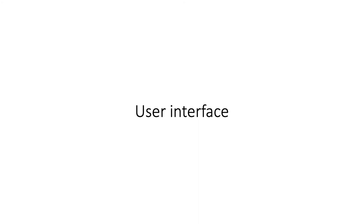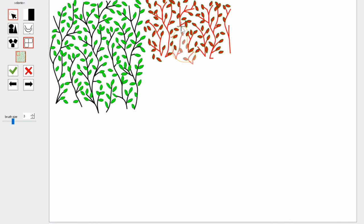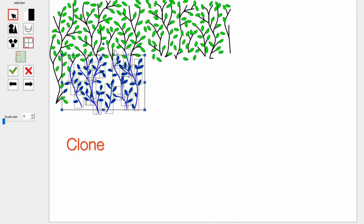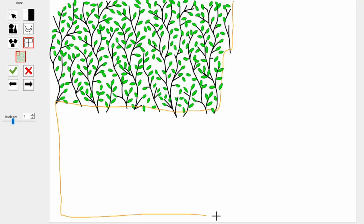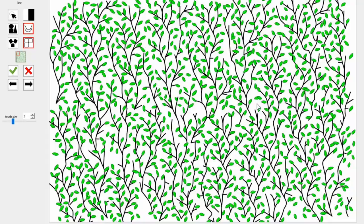The users can further improve the synthesis quality via our user interface. Our method is integrated into our interactive authoring system, which has two major functions, auto-complete and drawing, to generate repetitive patterns. For further quality improvement and customization, the users can accept, partially accept, or reject the predictions.